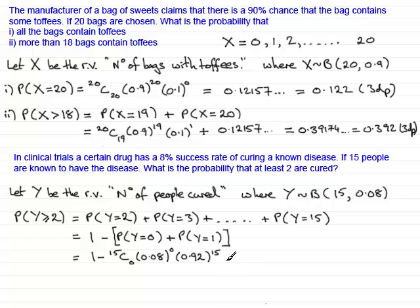Now we work out the probability of Y equals 1, so that would be plus 15C1. Probability of success, 0.08, would have occurred just once and the probability of failure would have occurred 14 times. So we have 0.92 to the power 14.